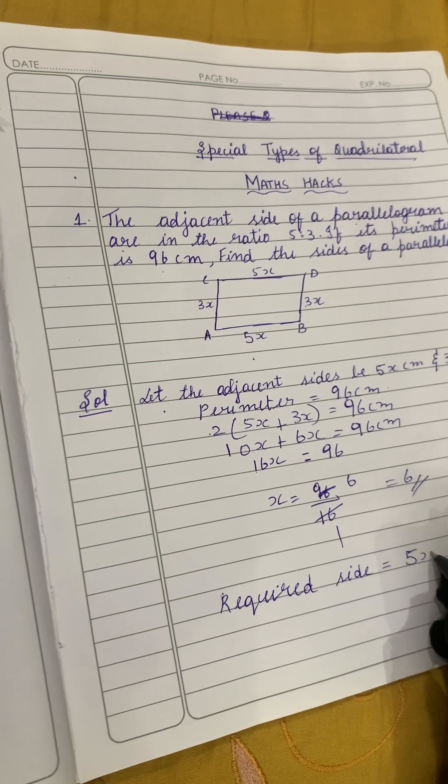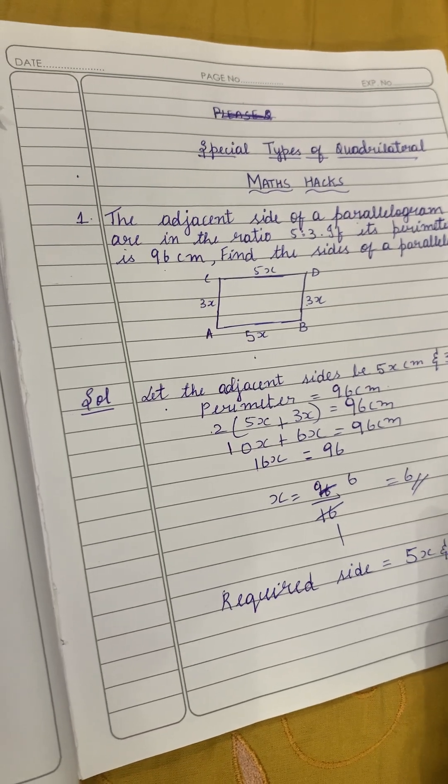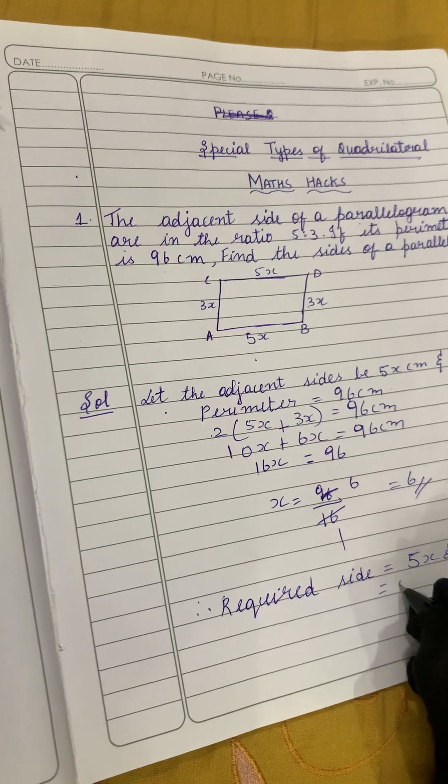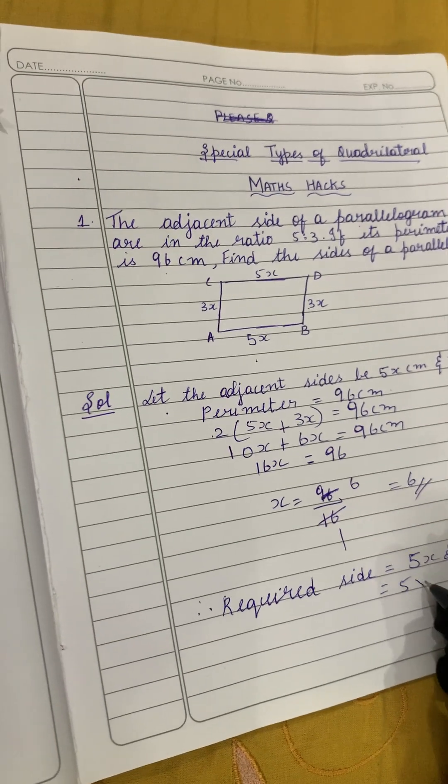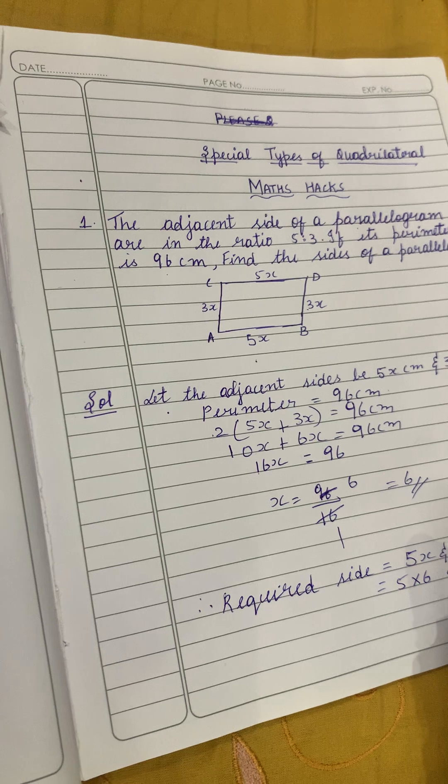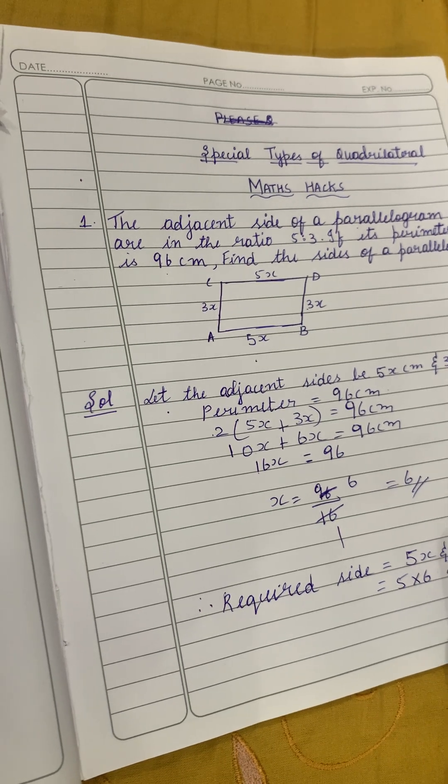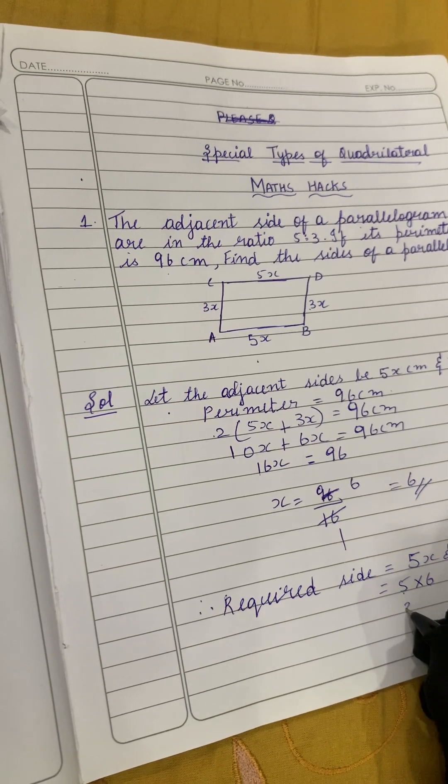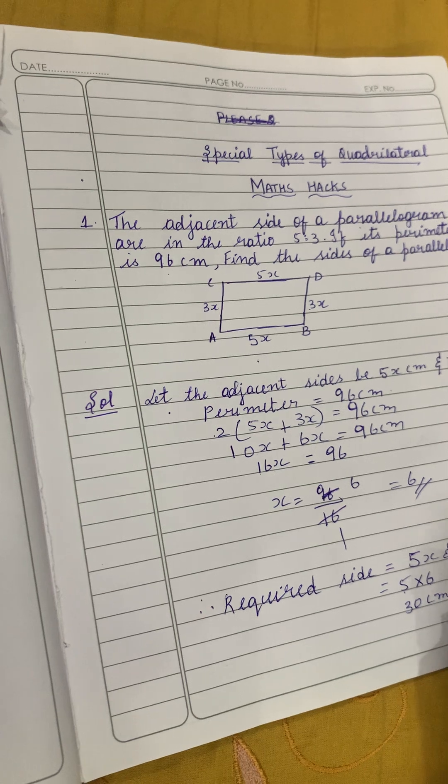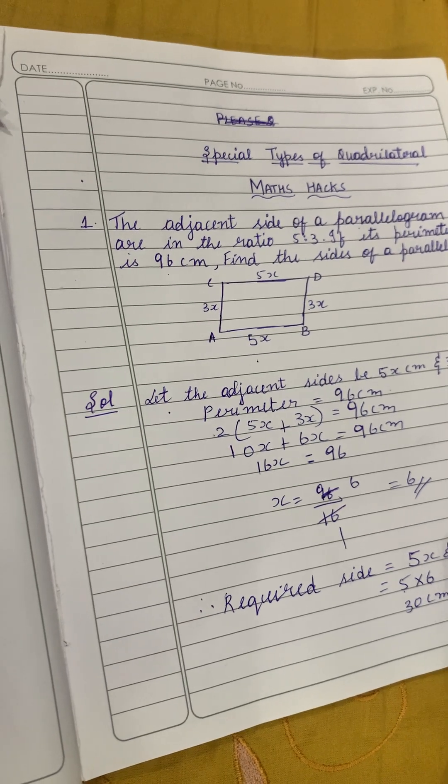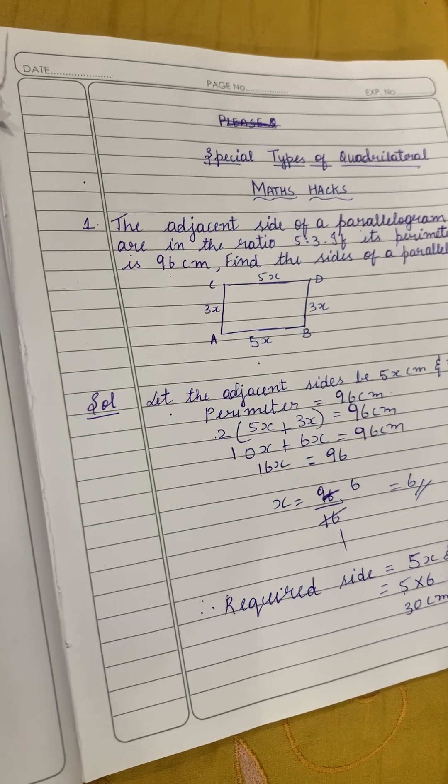Now required sides, what are the sides required? Two sides, right? What are those? 5x and 3x. So simple, in place of x we got the value of x, so in place of x we'll write 5 into 6 and 3 into 6.